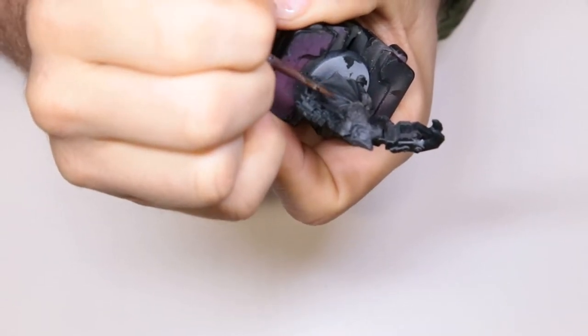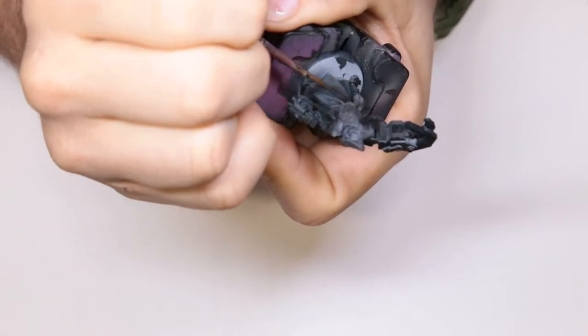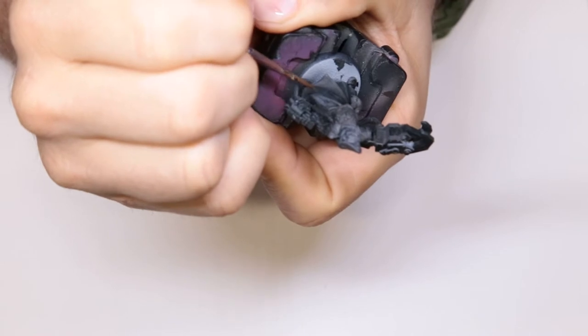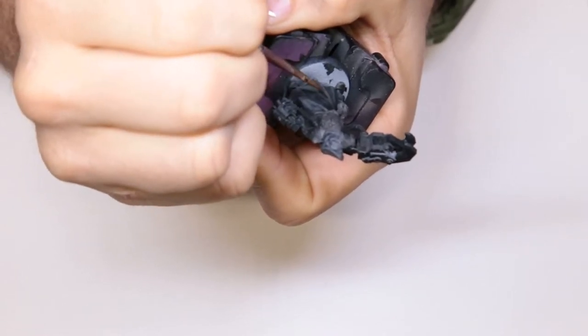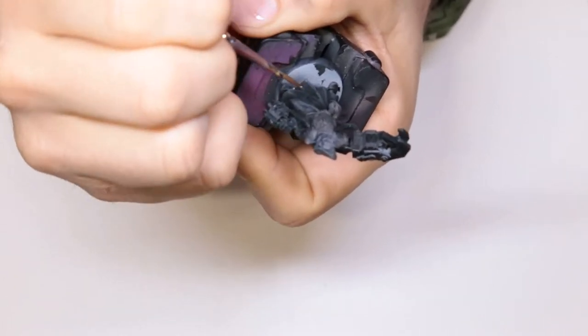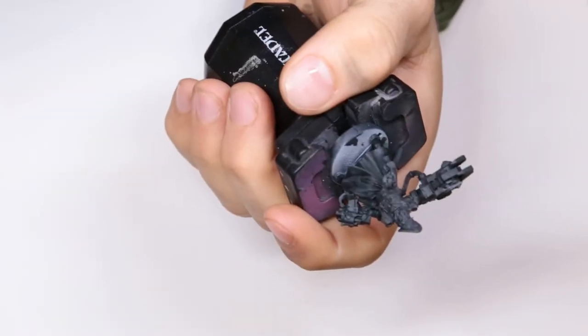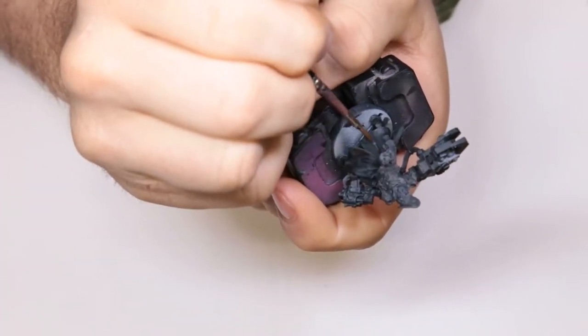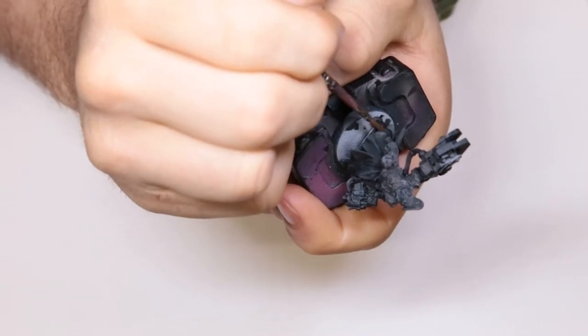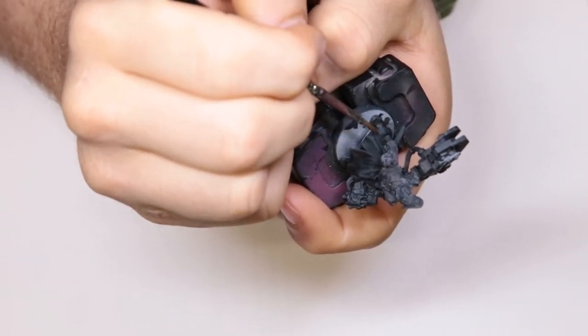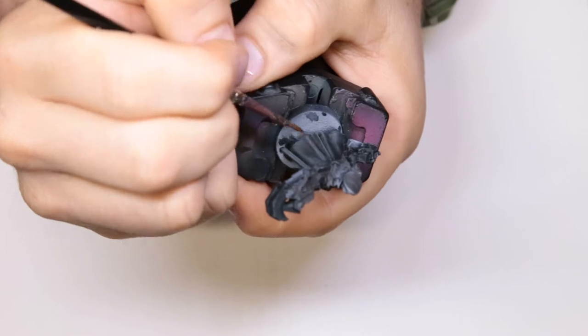Here we're coming through with a thinned down version of the same paint, the Skavenblight Dinge. We're just going through and filling in the areas where it didn't quite leave an opaque layer on the tops, making sure it gets a nice layer. And then we're using this to push it into the shadows so it creates a good transition from the high points to the dark points.